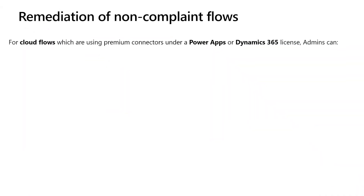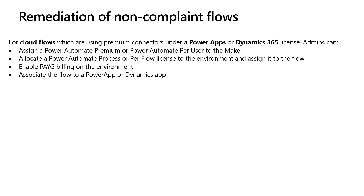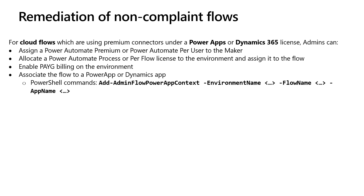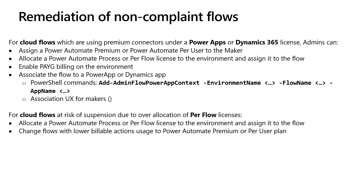Remediation — now that we have a list of non-compliant flows, what are our options? For cloud flows using premium connectors under a Power Apps or Dynamics 365 license, you can: assign a Power Automate Premium or Power Automate Per User license to the owner; allocate a Process or Workflow license to the environment and assign it to the flow; enable pay-as-you-go billing on the environment; or associate your flow to a Power App or Dynamics 365 app. You can use PowerShell commands or the UX in the maker experience. For over-allocation of per-flow licenses, you can allocate a Process or per-flow license to the environment and assign it to the flow, or change flows to Power Automate Premium or per-user plan.